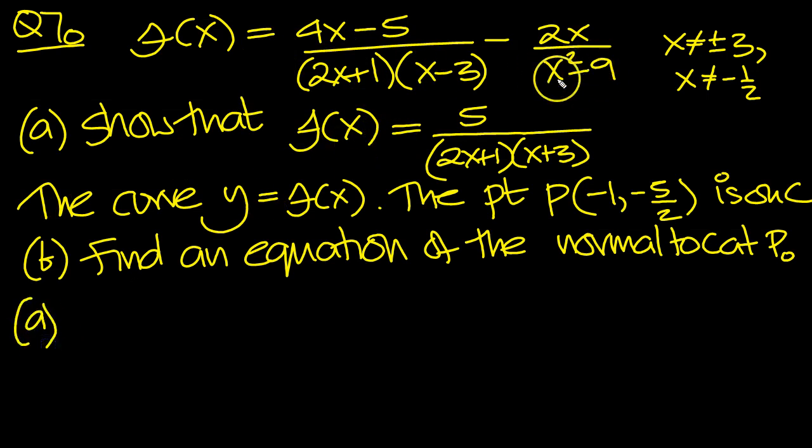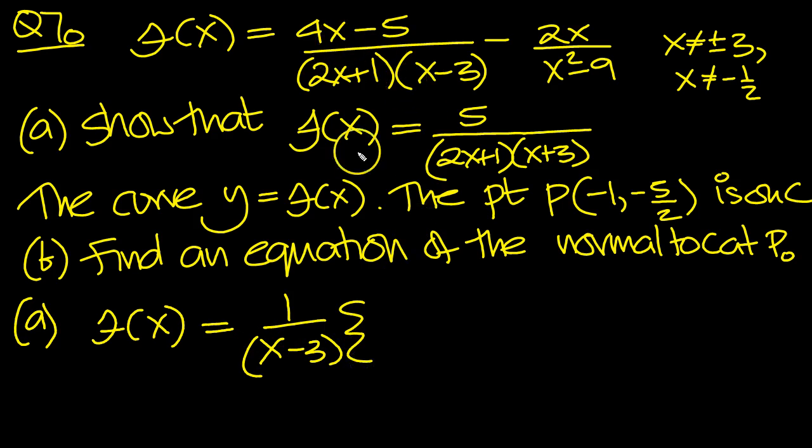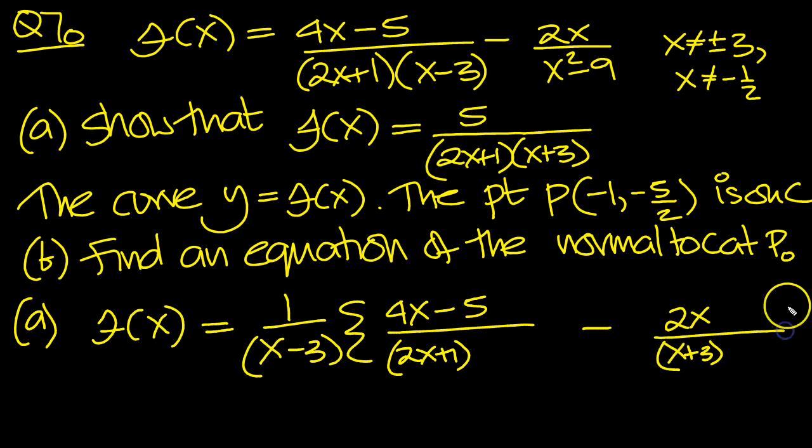Now you'll notice that this is the difference between two squares, x minus 3, x plus 3. There's an x minus 3 on the first term as well, so we can take that outside a bracket. So we've got 1 over x minus 3 common to both, so let's put that there. And what have we got inside? We've got 4x minus 5 still there. We've got the 2x plus 1 there. And on the second term, we've got minus 2x.